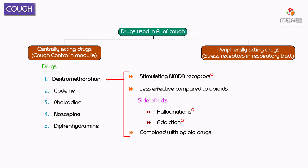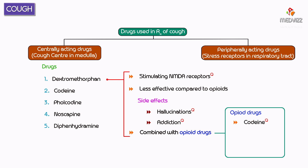Dextromethorphan can be combined with opioid drugs. The opioid antitussive drugs include codeine and folcodeine. The most common side effect of opioid drugs is constipation.